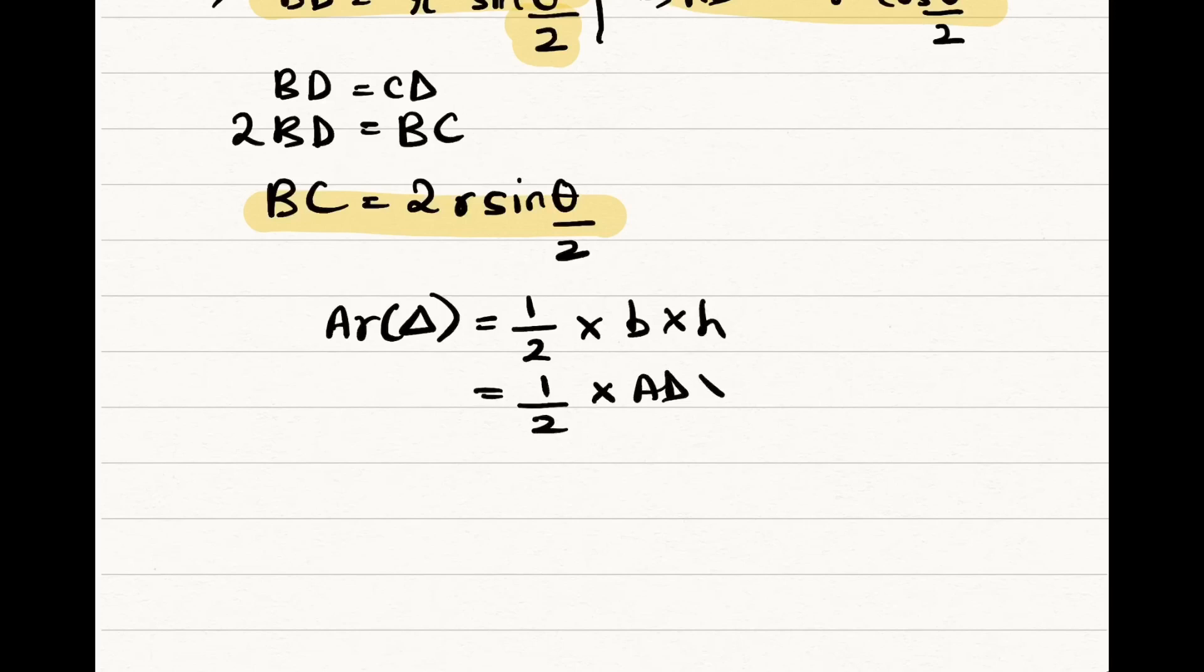Which is nothing but half into, by replacing the equations, r cos theta by 2 into 2r sine theta by 2.